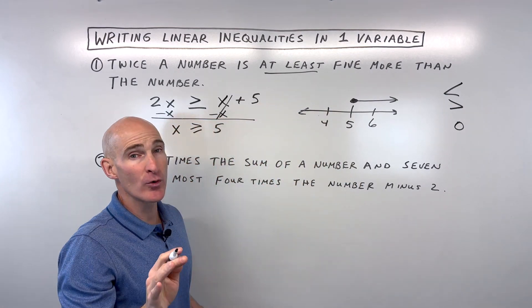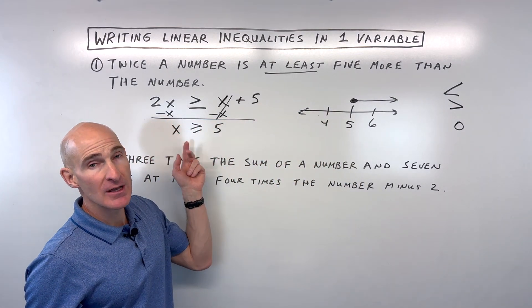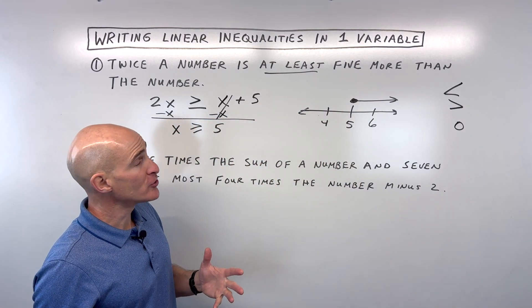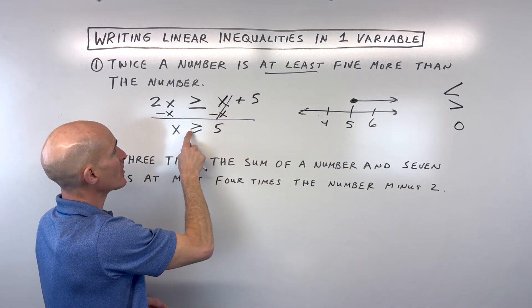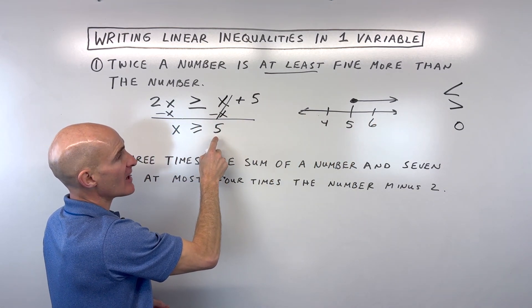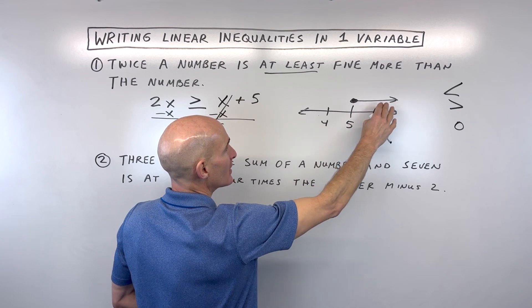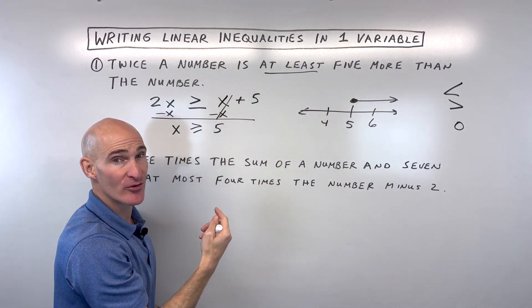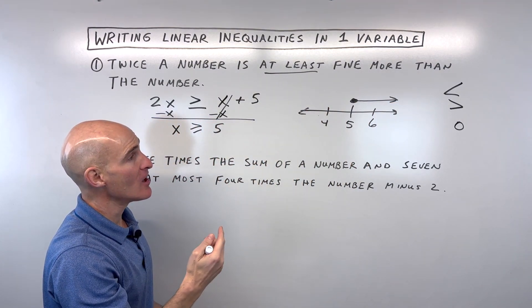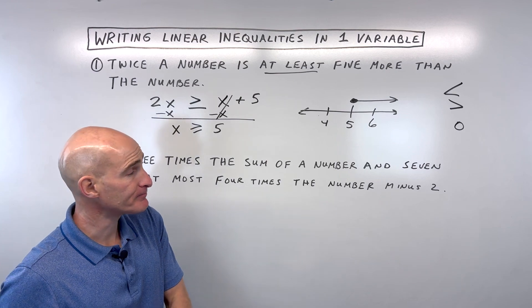That only works if the variable is on the left. You could also do a test point — say you put 6 in: is 6 greater than or equal to 5? Yes. So that's where you shade. If it was false, you'd shade the other direction. Let's take a look at another example.